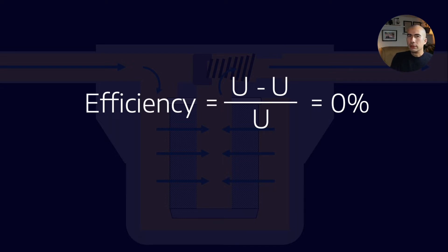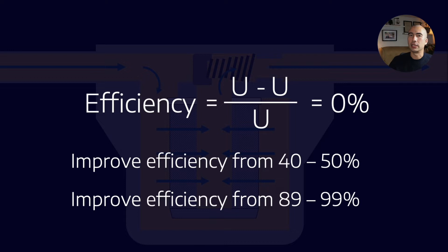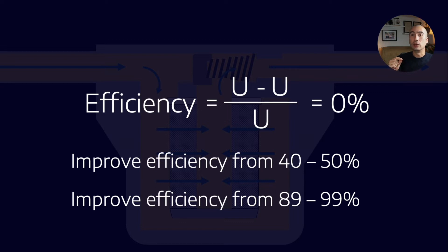Now if we have these efficiency numbers, why do we need another measure for the performance of a filter? Why do we need the beta ratio? Think of improving the efficiency of a filter from 40 to 50 percent, and then also improving it from 89 to 99 percent. In percentage terms those are both equal, but the performance improvement from 89 to 99 percent is more material. Getting that extra bit of performance — maybe increasing efficiency from 99 to 99.9 percent — is much more difficult to do.